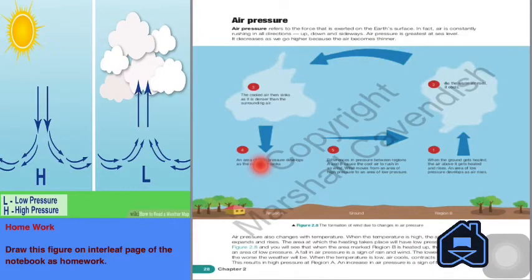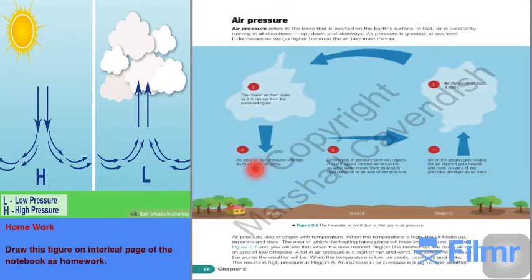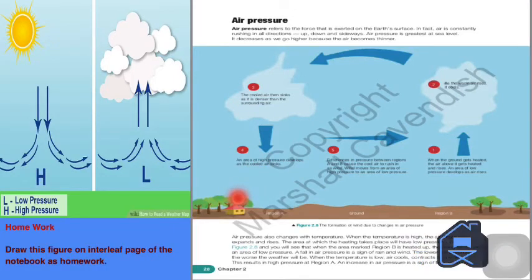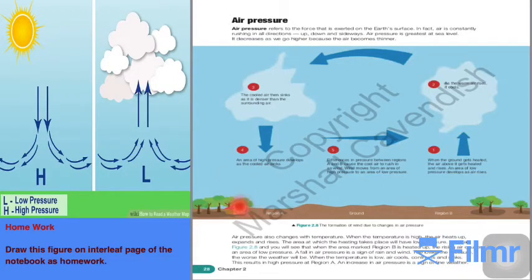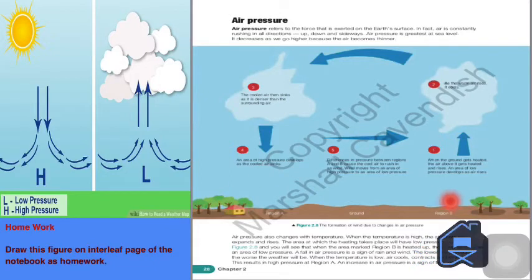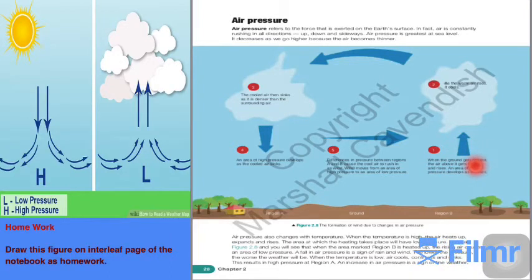Then it sinks in region B. So an area of high pressure develops as the cold air sinks in region A. This is the sign of pleasant weather in region A, while in region B it is the sign of strong, heavy wind or stormy wind.